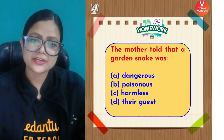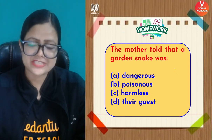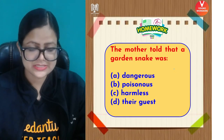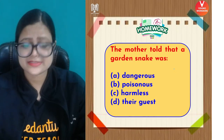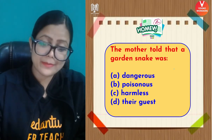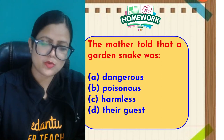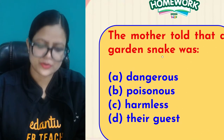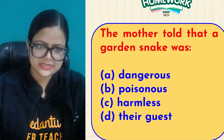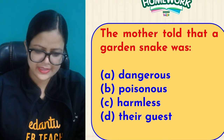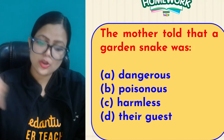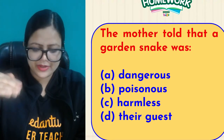Your homework question is: The mother told that a garden snake was dash. Options are: dangerous, poisonous, harmless, or their guest. Comment the correct answer below. I will be waiting for your answers. I hope the question is visible — comment in the chat so that you can get your name mentioned.